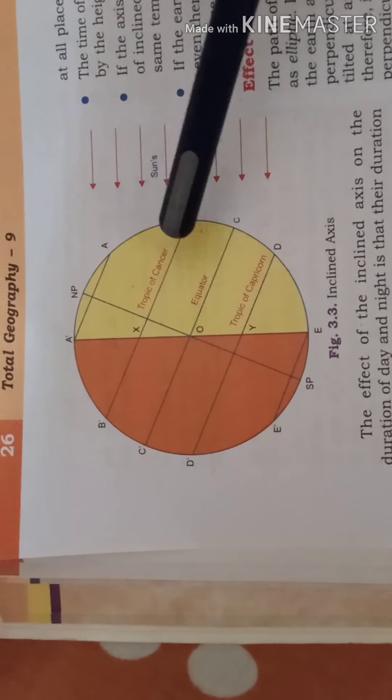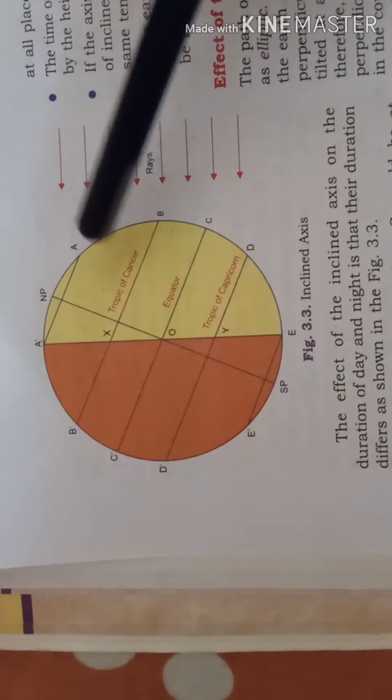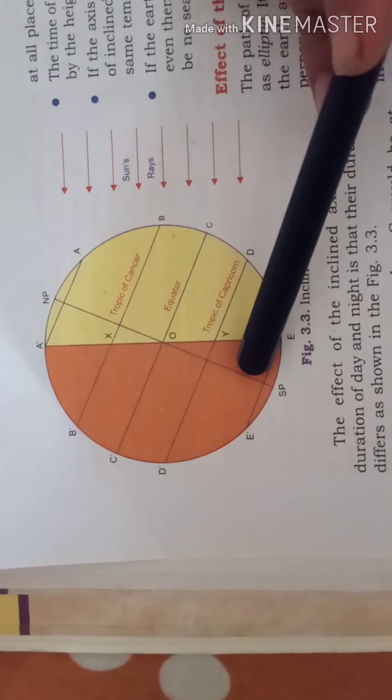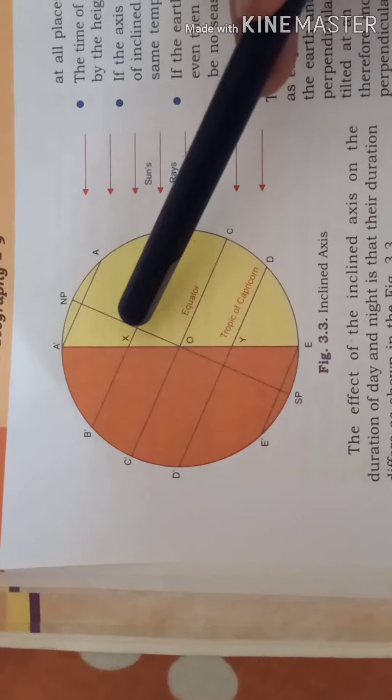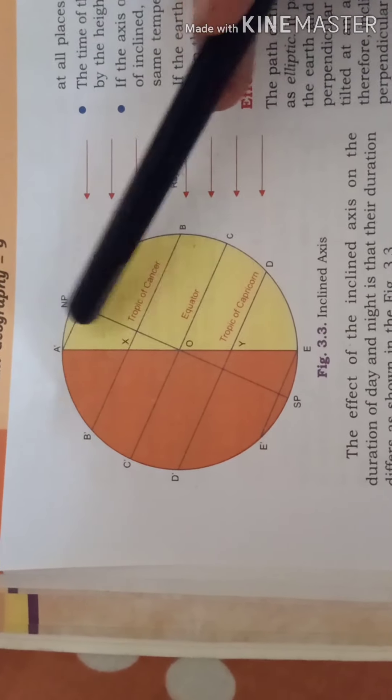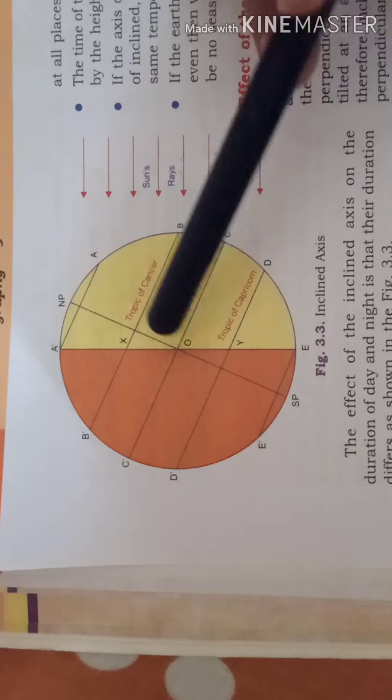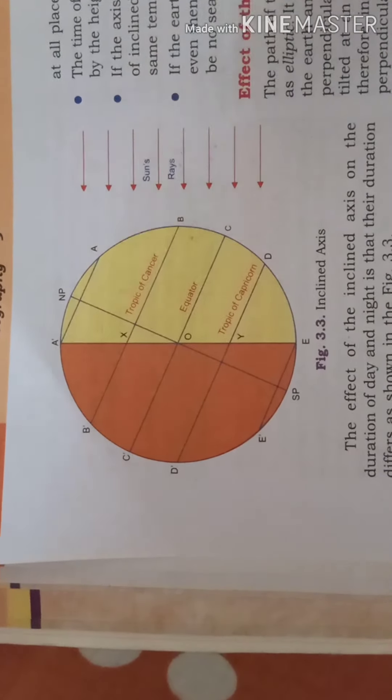Now let us say which is actually a reality. The earth's axis is tilted. So here it makes an angle of 66.5 degree with the orbital plane and 23.5 degree with the vertical.